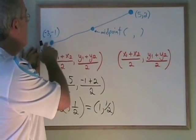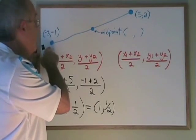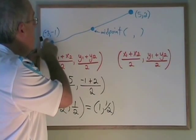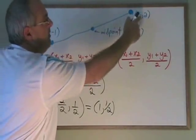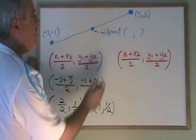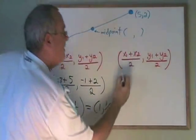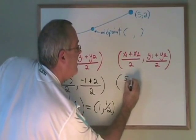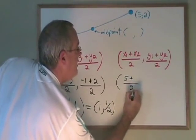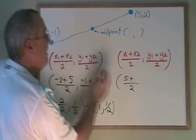But what happens if instead of calling this point 1 and naming x1 and y1 as negative 3 and negative 1, what if we start at the other end? Well, let's try it and find out. If x1 is 5, we get 5, and x2 will be the negative 3.